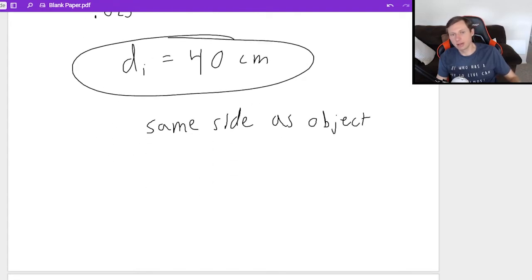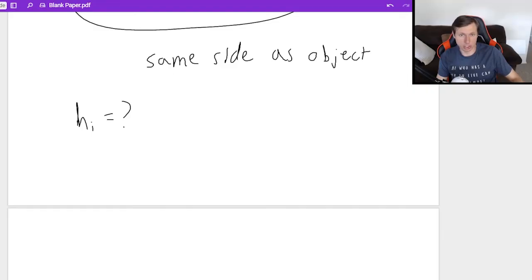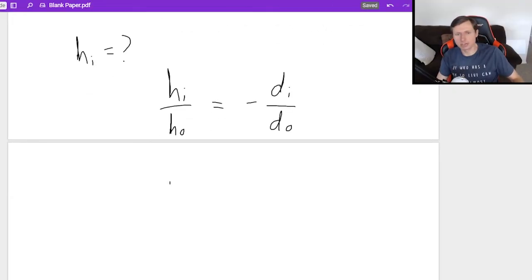Now, if I would like to find the image height, then I'm going to use the magnification equation. You'll notice I'm not actually going to use magnification. I'm just going to say height image over height object equals negative image distance over object distance. And I have all these variables like HI divided by HO is 6 centimeters equals negative DI is 40. And DO is also 40.